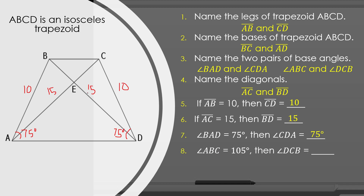Number eight, if angle ADC is equal to what? Since they are the upper base angles, we can say that angle BCD is equal to 105 degrees as well, since they are congruent. So, angle ADC is equal to 105 degrees.